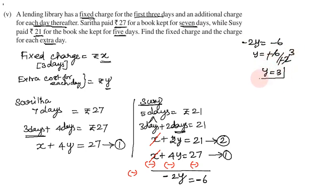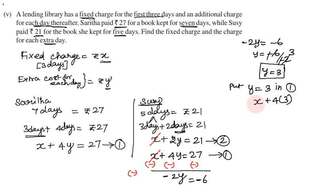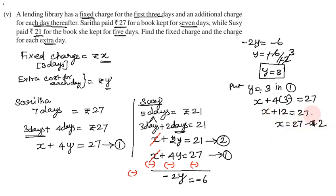Y equals 3. Now substituting y equals 3 back into equation 1: x plus 4 into 3 equals 27. So x plus 12 equals 27, which gives x equals 27 minus 12, so x equals 15.